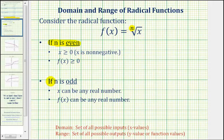But if n is odd, then the radicand or x can be any real number, and if the radicand can be positive, negative, or zero, that means the function values would also be any real number.